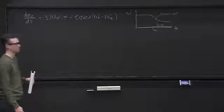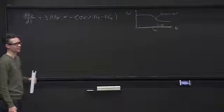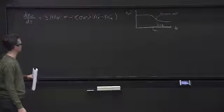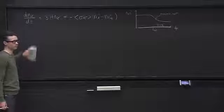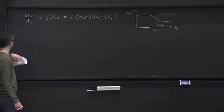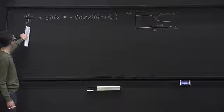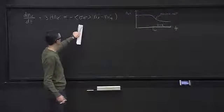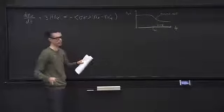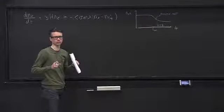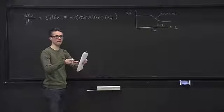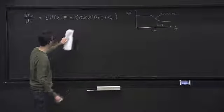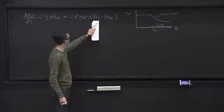So back to dark matter. We want to solve this equation — this is our master equation for thermal freeze-out. This is the change in time of the number density of our dark matter particle. This term describes the dilution from the expansion of the universe, and this term describes annihilations — reactions that change the number of dark matter particles. It gets contributions from dark matter annihilating to standard model particles, but also the reverse reaction. The point is that if this annihilation term is big, it drives the number density to the equilibrium value.